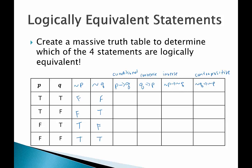For the conditional P then Q: it's true when P is false or Q is true. Row 1: Q is true, so true. Row 2: true implying false — false. Row 3: false hypothesis — true. Row 4: false hypothesis — true. For the converse Q then P: true-true is true; false hypothesis is true; true-false is false; false hypothesis is true. For the inverse not P then not Q: false hypothesis true; false hypothesis true; true-false is false; true-true is true. For the contrapositive not Q then not P: false hypothesis true; true-false is false; false hypothesis true; true-true is true.